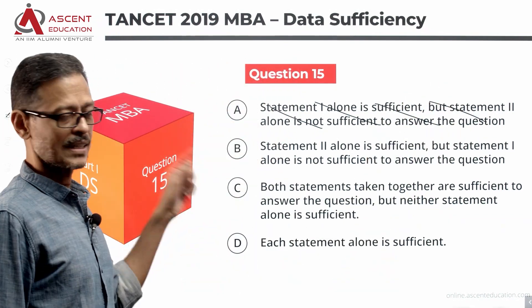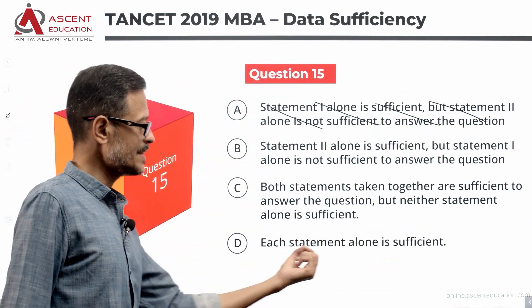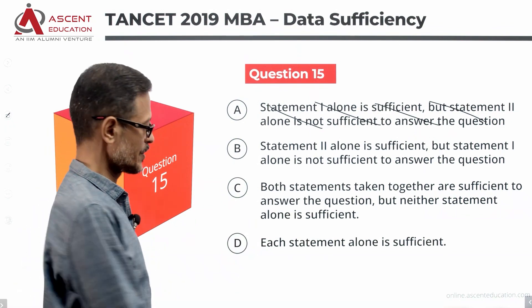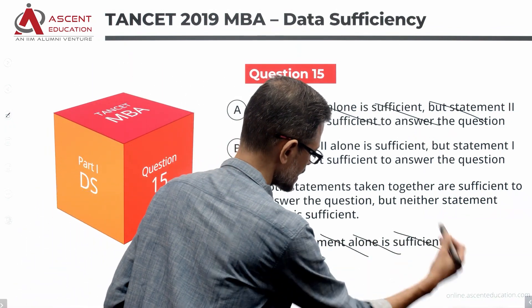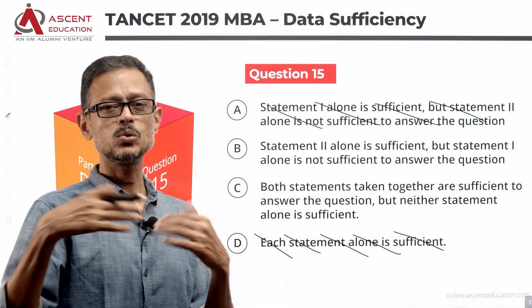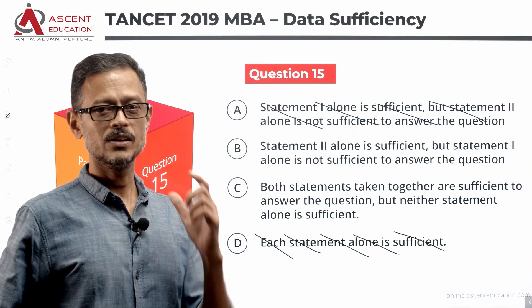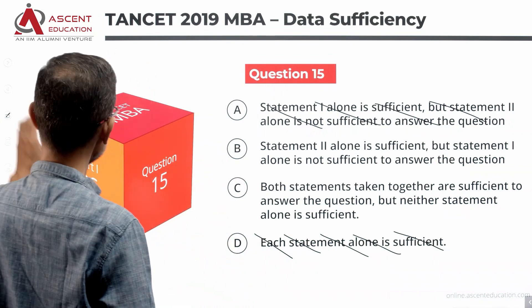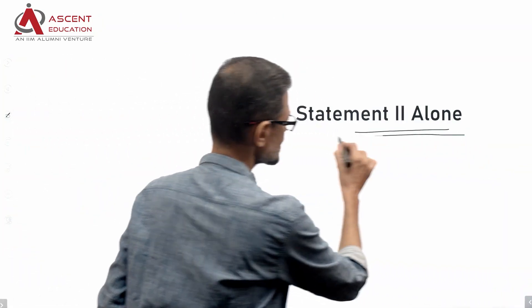Statement one alone is not sufficient — rule out answer option A. We can also eliminate D, since each statement alone is sufficient is ruled out. Statement one is not sufficient, so we've eliminated two answer options and are down to just B or C. Next step is to evaluate statement two alone.